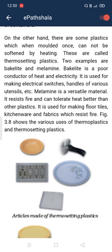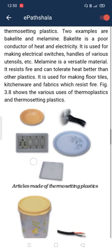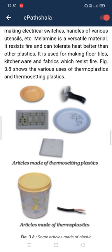Melamine is a versatile material. It can resist fire and tolerate heat better than other plastics. It is used for making floor tiles, kitchenware, and fabrics that resist fire.